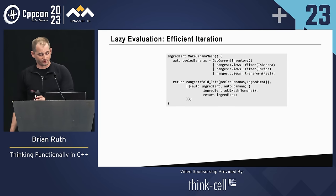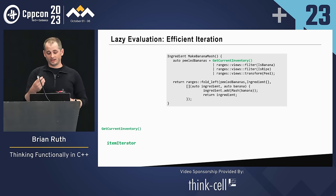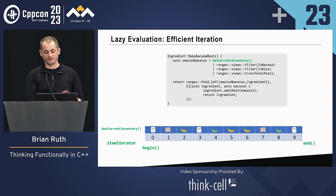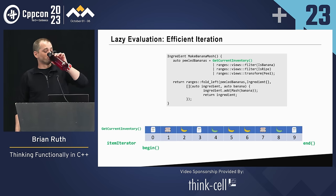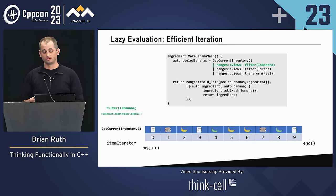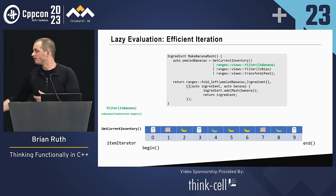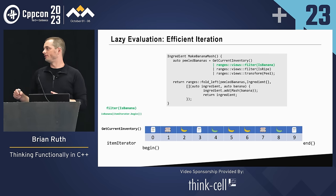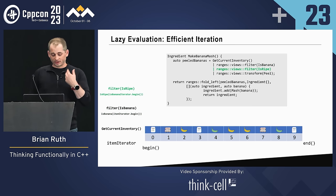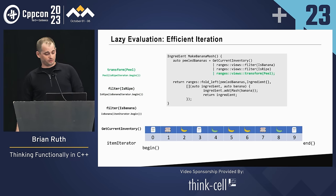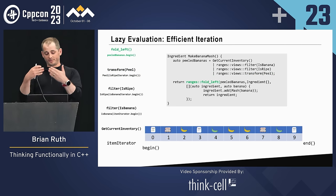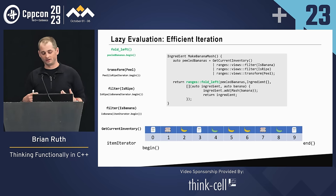Let's get back to lazy evaluation and efficient iteration. One of the powers of ranges is that they use range adapters. When we get current inventory, it returns an item iterator with its own begin and end. When we pipe it through, we've got a view of is_banana — it's not actually going to do anything yet. It's just going to store the iterator. Same thing with is_ripe: it takes the iterator from the previous thing and just hangs out. Same with our transform. Then at the top we've got our fold_left which kicks off all of this, with our default ingredient as an empty bowl.